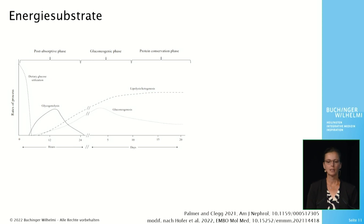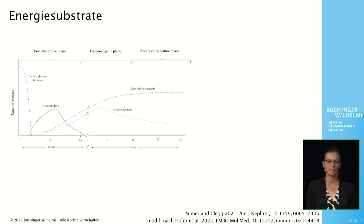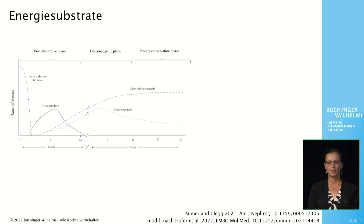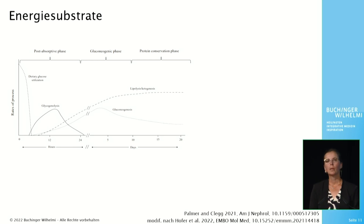In the post-absorptive phase, after the cessation of food intake, energy is initially provided by glucose from the glycogen stores in the muscle and liver. However, these energy stores are depleted relatively quickly. Blood glucose and insulin levels drop while lipolysis starts. Now the fat tissue releases more free fatty acids and glycerol. Free fatty acids can be used directly as energy substrate or are converted to ketone bodies in the liver.